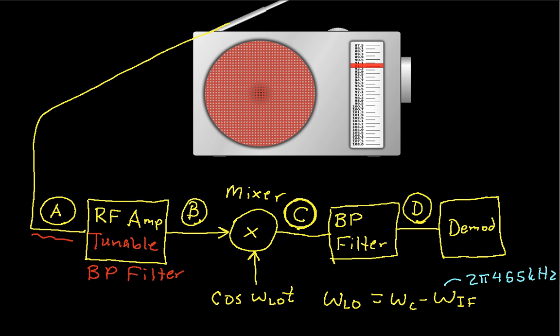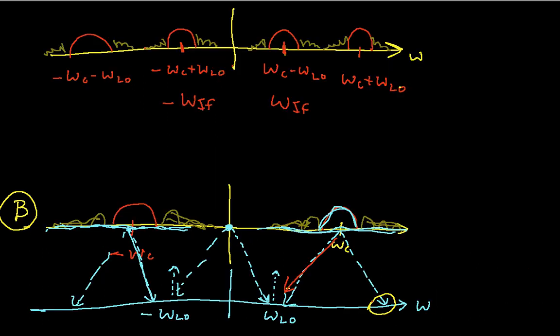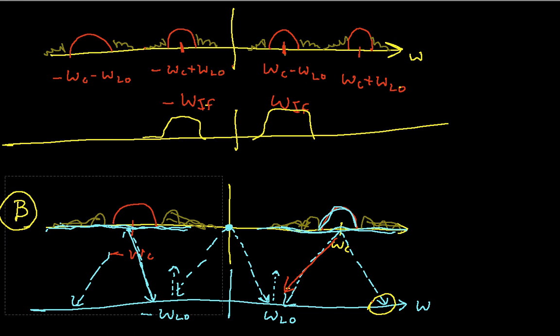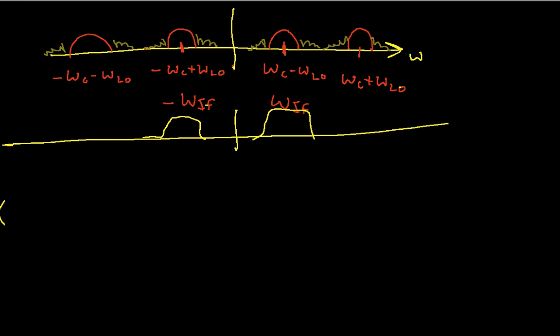And so the output of the band pass filter has a transfer function that looks something like this. And so when I run the output of the mixer through that band pass filter, then the only thing that's left is the radio station that I'm interested in.